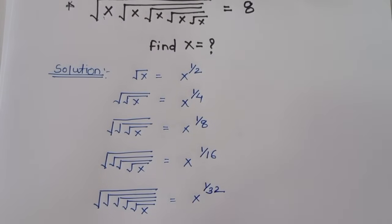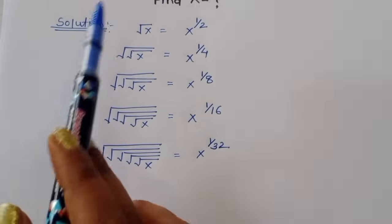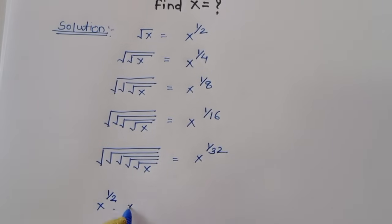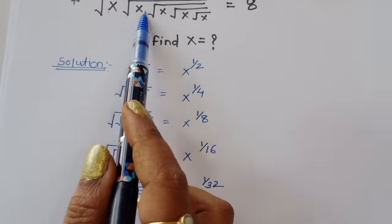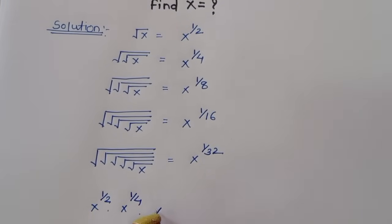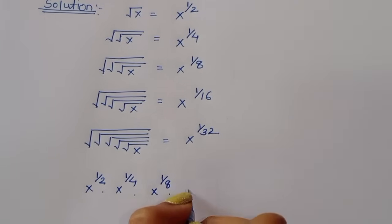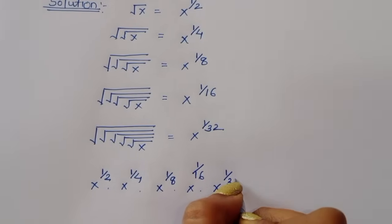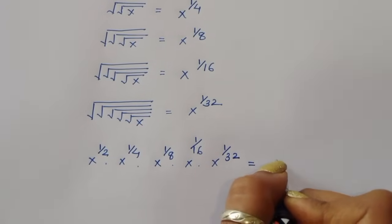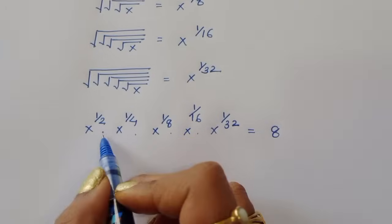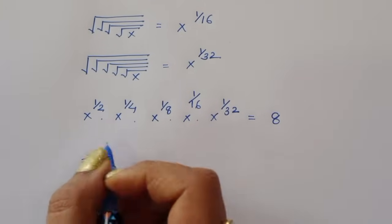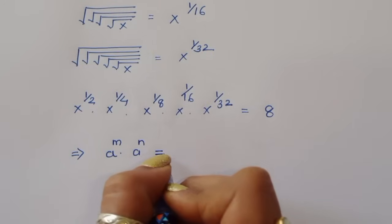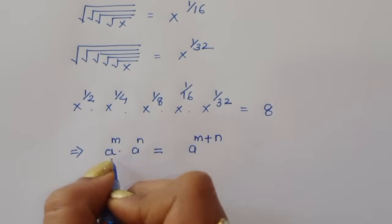Now let's substitute these values. We have x power 1 by 2, times x power 1 by 4, times x power 1 by 8, times x power 1 by 16, times x power 1 by 32, equal to 8. Since this is in multiplication form, we use the formula: a power m times a power n equals a power m plus n.